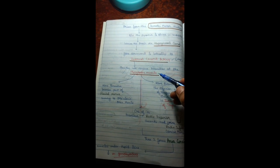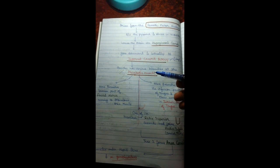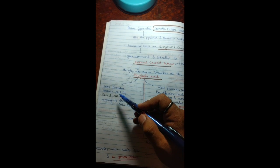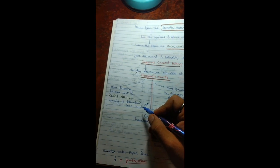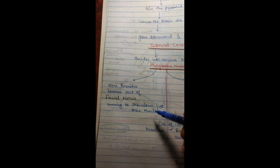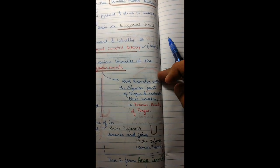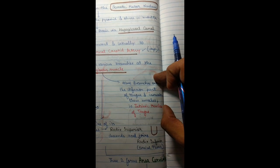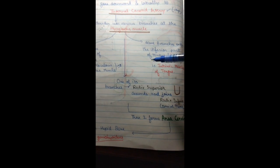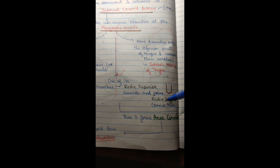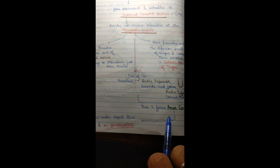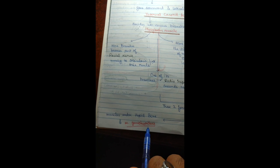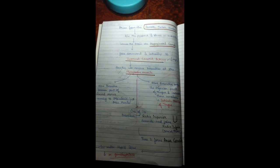The hypoglossal nerve then divides into various branches. Some branches become part of the facial nerve running to the orbicularis oris muscle. Other branches enter the inferior part of the tongue and innervate the intrinsic muscles of the tongue. Additionally, the radix superior descends and joins the radix inferior from the cervical plexus to form the ansa cervicalis, which innervates the muscles under the hyoid bone and the geniohyoid muscle.